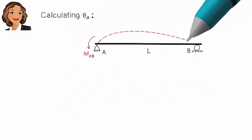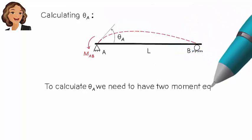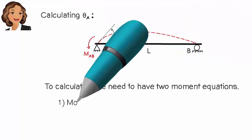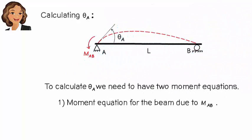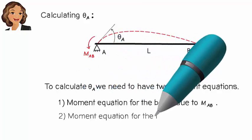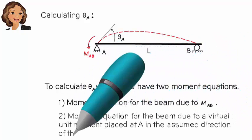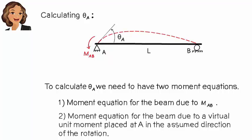To calculate theta A, we need to have two moment equations: moment equation for the beam due to M_AB, and moment equation for the beam due to a virtual unit moment placed at A in the assumed direction of the rotation.